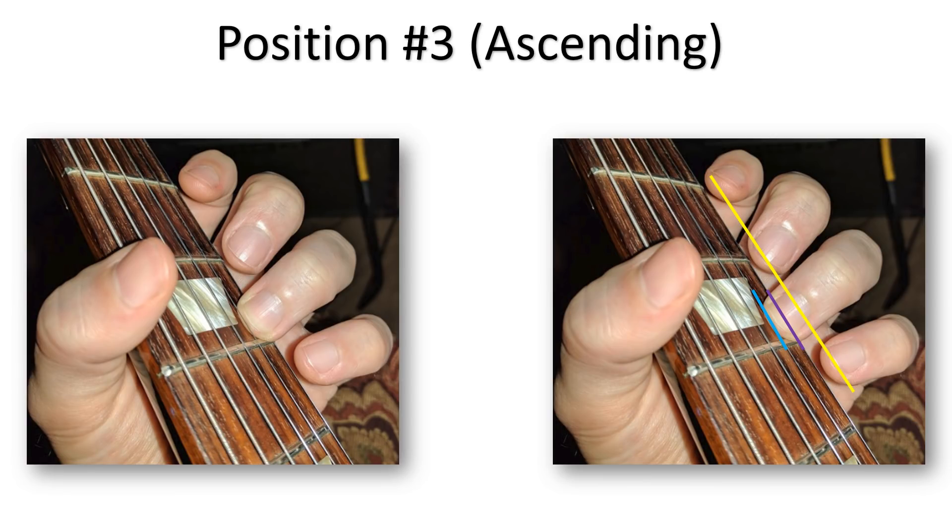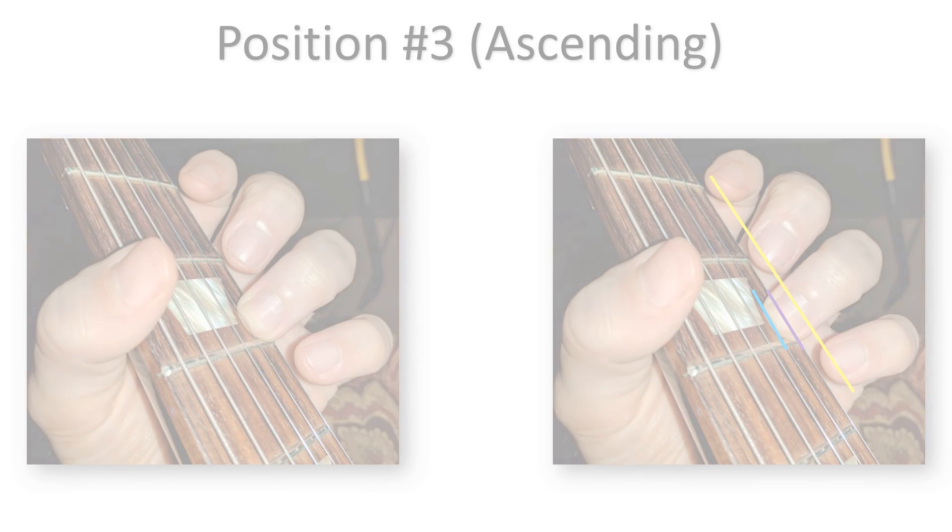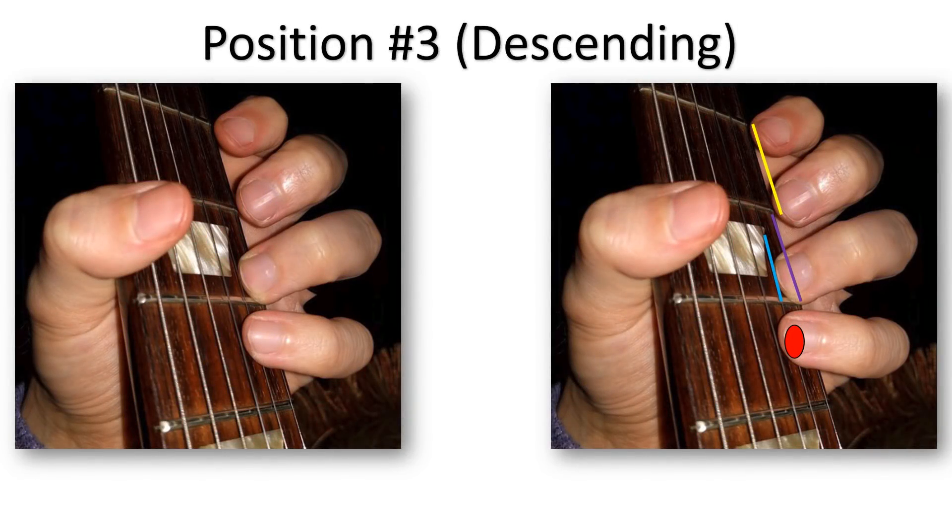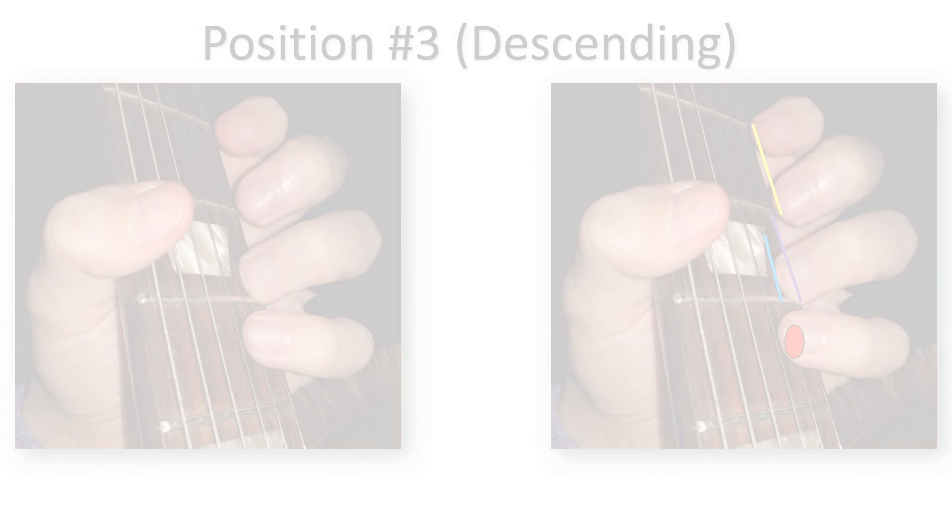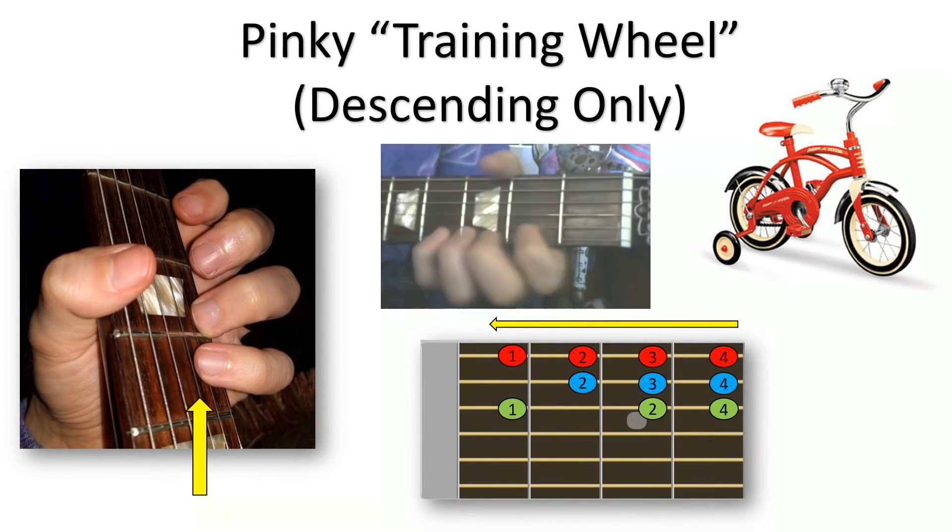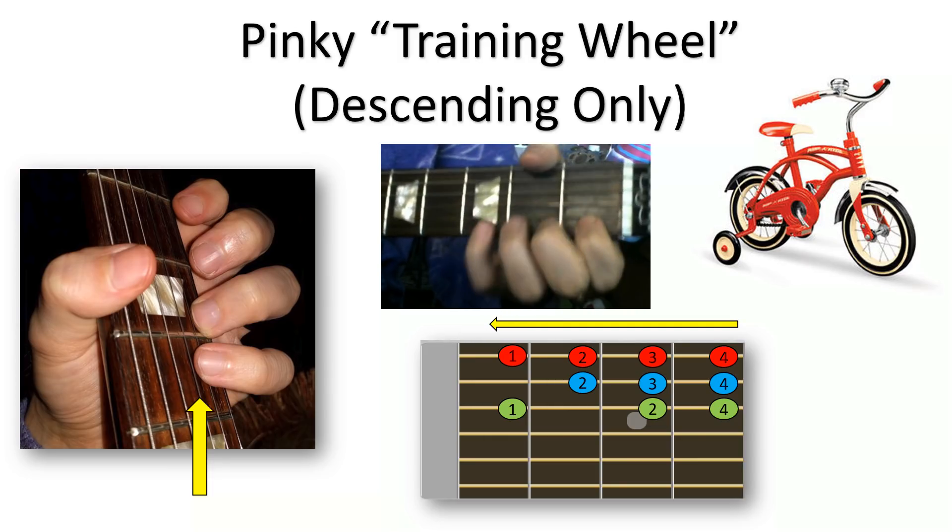This ascending version attempts to line up the three non-used fingers as well as muting the B string. With position 3 descending, I use what I call the pinky training wheel. This is where I rest my pinky on the B string as I flip to my third finger.